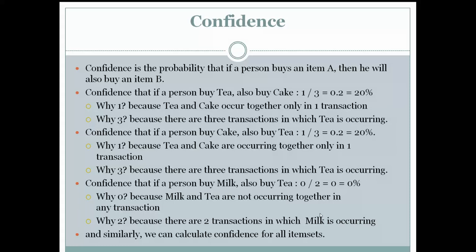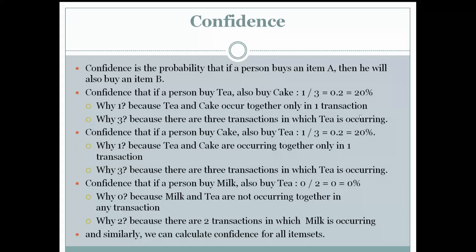Regarding confidence, for example: confidence that if a person buys tea they also buy cake equals the count of (tea and cake together) divided by the count of transactions containing tea, which is 1/3 = 0.2, or 20 percent. Tea and cake occur together in one transaction; tea occurs in three transactions — that is why we have one in the numerator and three in the denominator. Similarly, confidence that if a person buys cake they also buy tea is 1/3.